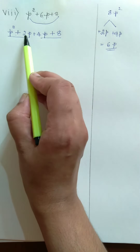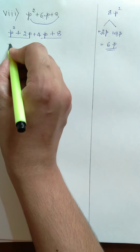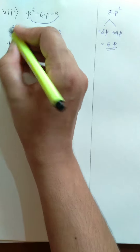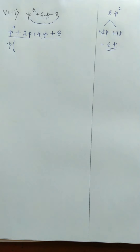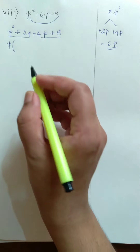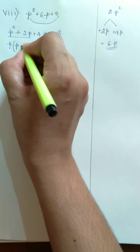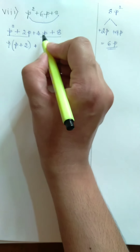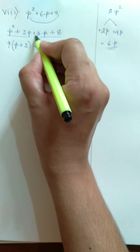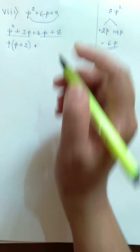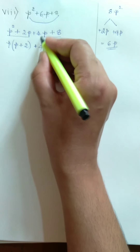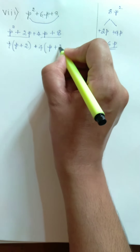In the first group, P is a common factor. Taking P out of P squared plus 2P, the remaining is P plus 2. Now consider the second group with 2 terms: 4P and 8. The numerical values share 4 as a common factor. Taking 4 as common, we get 4 into P plus 2, since 2 fours are 8.